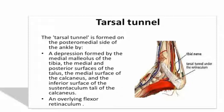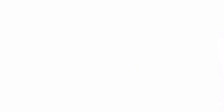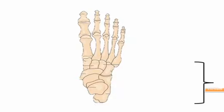The contents passing through the tarsal tunnel can be remembered by the mnemonic 'Tiny Dogs Are Not Hunters': T for the tibialis posterior muscle, D for the flexor digitorum longus muscle, A for the posterior tibial artery, N for the tibial nerve, and H for the flexor hallucis longus muscle.